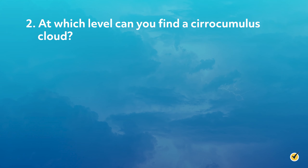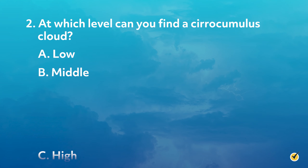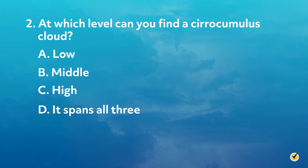Number two: at which level can you find a cirrocumulus cloud? A. Low. B. Middle. C. High. Or D. It spans all three. The correct answer is C. A cirrocumulus is a puffy, high-level cloud, often found in rows that mimic fish scales.